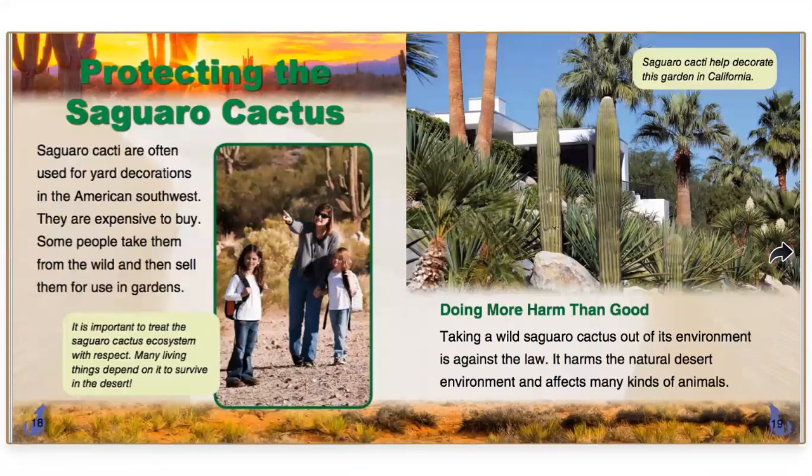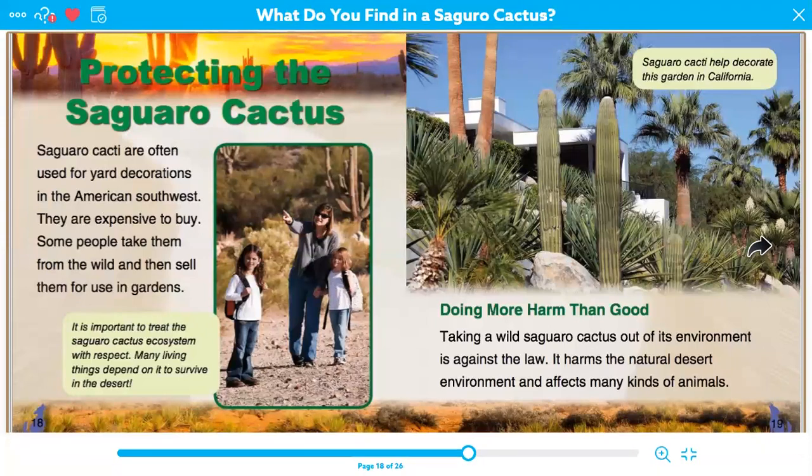Protecting the saguaro cactus. Saguaro cacti are often used for yard decorations in the American Southwest — they're expensive to buy. Some people take them from the wild and sell them for use in gardens. Just like we learned last week with Earth Day and protecting trees, it's the same thing with cactuses. It is important to treat the saguaro cactus ecosystem with respect because many living things depend on it to survive in the desert. Taking a wild saguaro cactus out of its environment is against the law — it harms the natural desert environment and affects many kinds of animals.